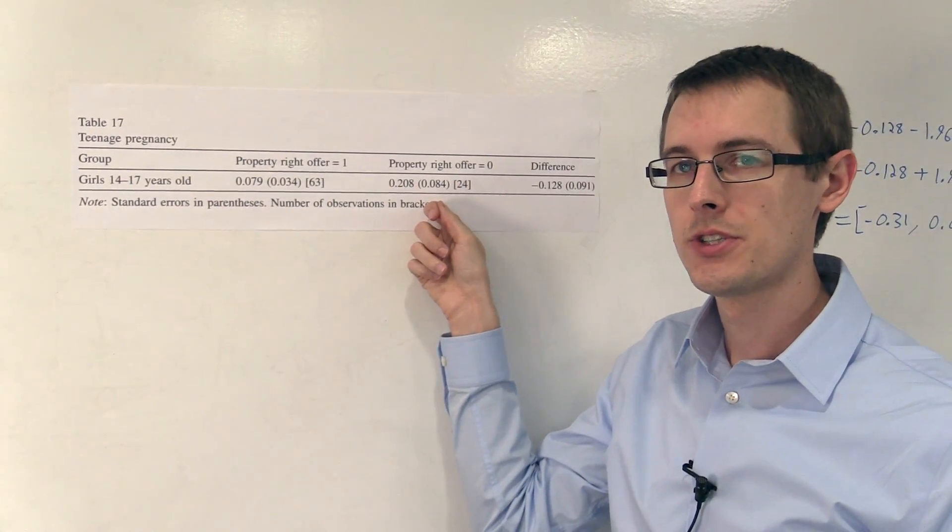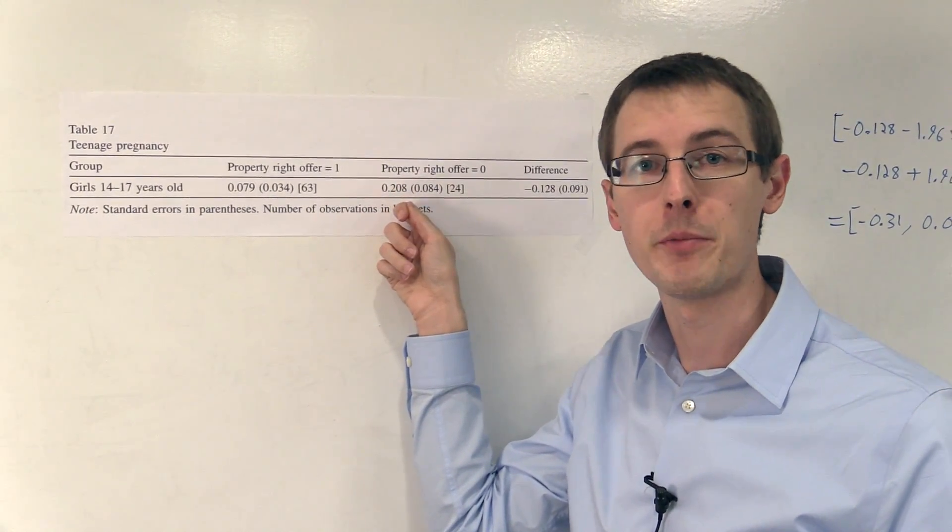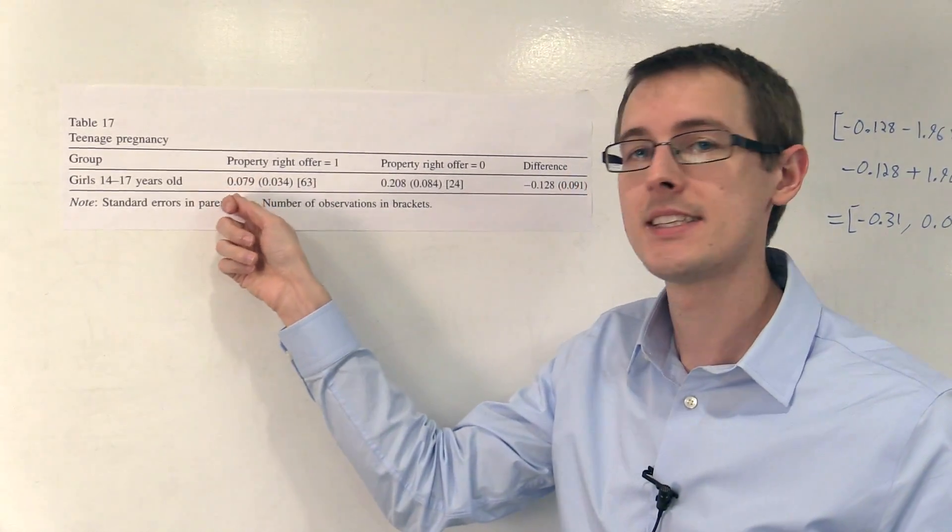Girls who lived in households who did not have the option of getting property rights, 20.8% of them were pregnant, more than twice as high as the 7.9%.